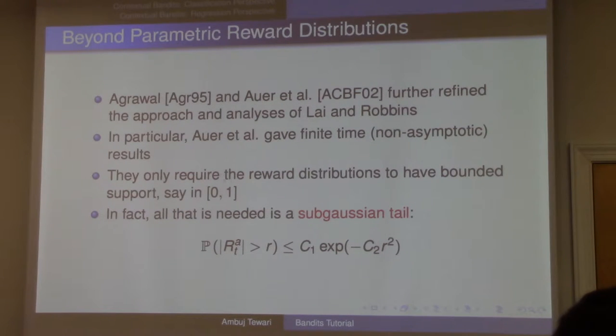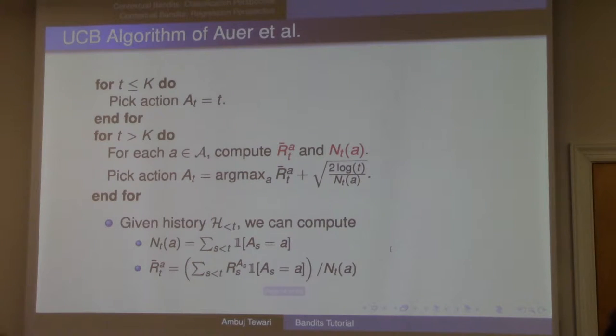It was more general, it could handle more general cases than Lai-Robbins, because remember they needed a parametric family. These guys assume that your reward distributions are such that the rewards are always bounded in some interval. But other than that, they're not assuming anything. Any distribution could be nonparametric but with bounded support.